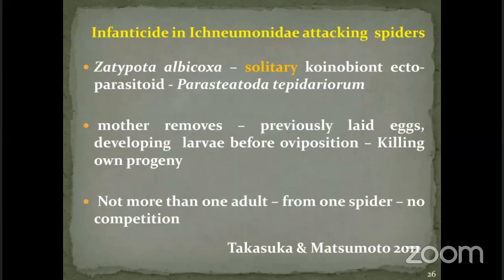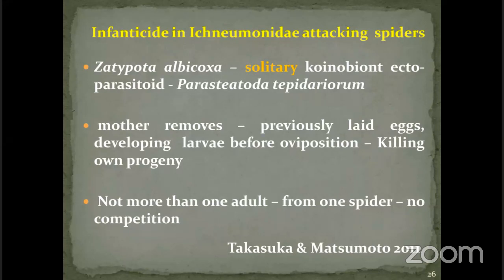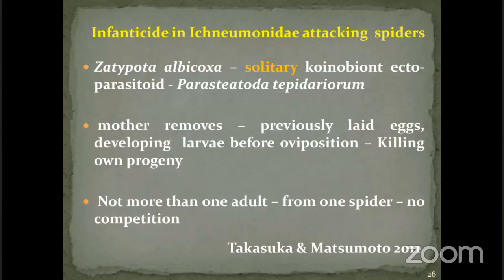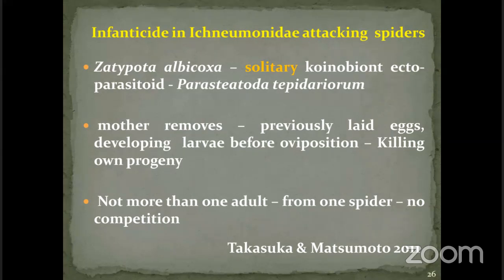Infanticide is also observed in Ichneumonidae. The species of Zatypota, which is a solitary koinobiont ectoparasitoid of a spider species, demonstrates that the mother removes previously laid eggs and other developing larvae of the same species, killing its own progeny. This is mainly because the parasitoids are solitary — not more than a single adult can emerge from one spider. So the mother avoids competition among its own eggs.